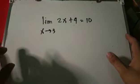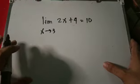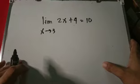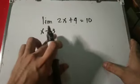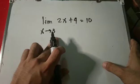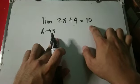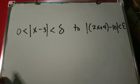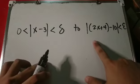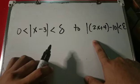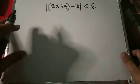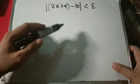Example: let's try to show that the limit of 2x plus 4 as x approaches 3 is 10. Using the letters we discussed: the value that x approaches, which is a, is 3; the limit L is 10. So we want to know how do we go from the absolute value of x minus 3 is greater than zero but less than delta, to the absolute value of 2x plus 4 minus 10 is less than epsilon.